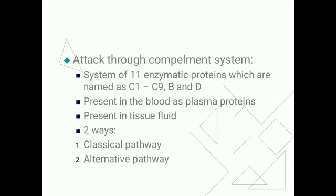The complement system is a system of enzymatic proteins named C1 to C9 as well as B and D, present in the blood as plasma proteins as well as in tissue fluid. The complement system acts by two pathways: the classical pathway and the alternate pathway.